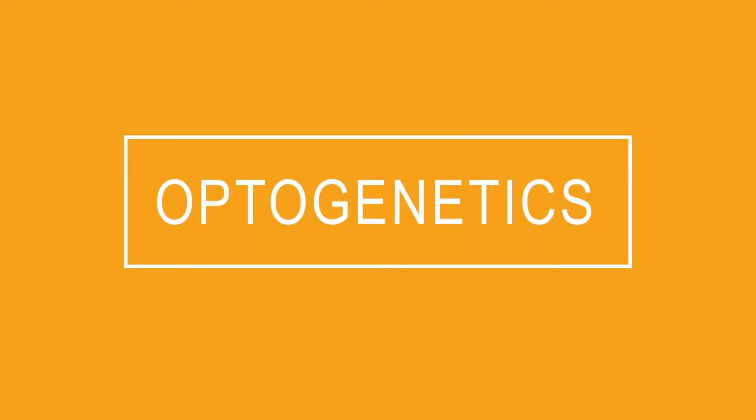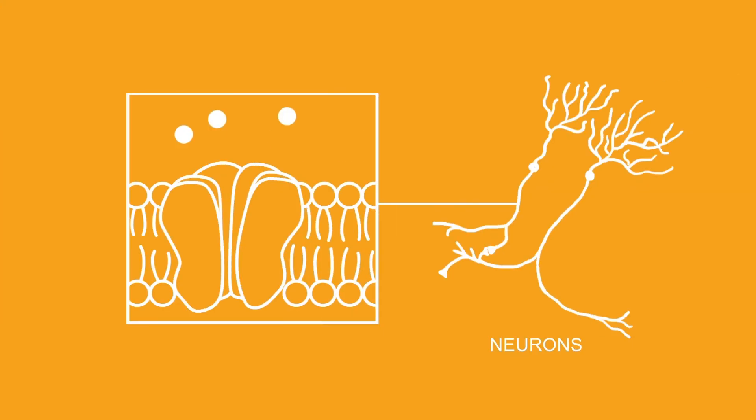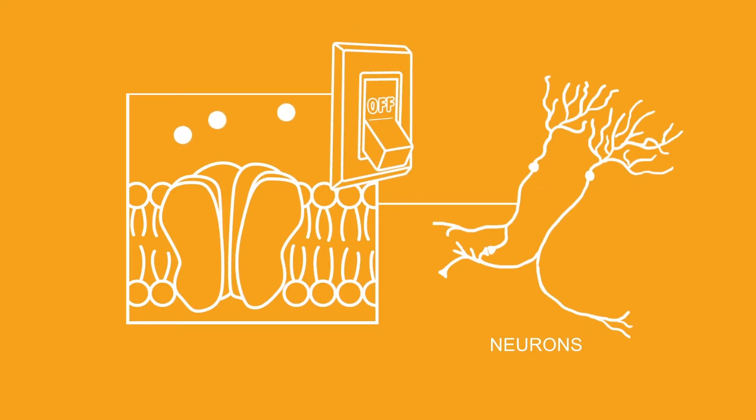And thanks to some salt-loving bacteria found in desert lakes, we can also add an off-switch. A light-activated pump found in the bacteria shuttles negatively charged atoms into neurons, shutting down activity.